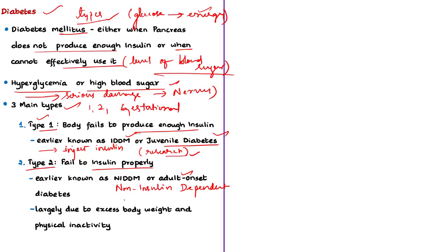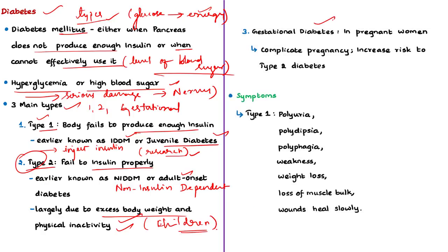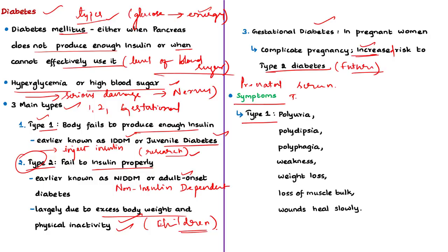Type 2 diabetes comprises the majority of diabetic people worldwide and is largely the result of excess body weight and physical inactivity. Until recently seen only in adults, it is now increasingly seen in children as well. The third form, gestational diabetes, occurs when a pregnant woman without a previous diabetes diagnosis develops high blood glucose levels. Women with gestational diabetes are at increased risk of complications during pregnancy and delivery, and both they and their children face increased risk of Type 2 diabetes in the future. Gestational diabetes is diagnosed through prenatal screening rather than through reported symptoms.